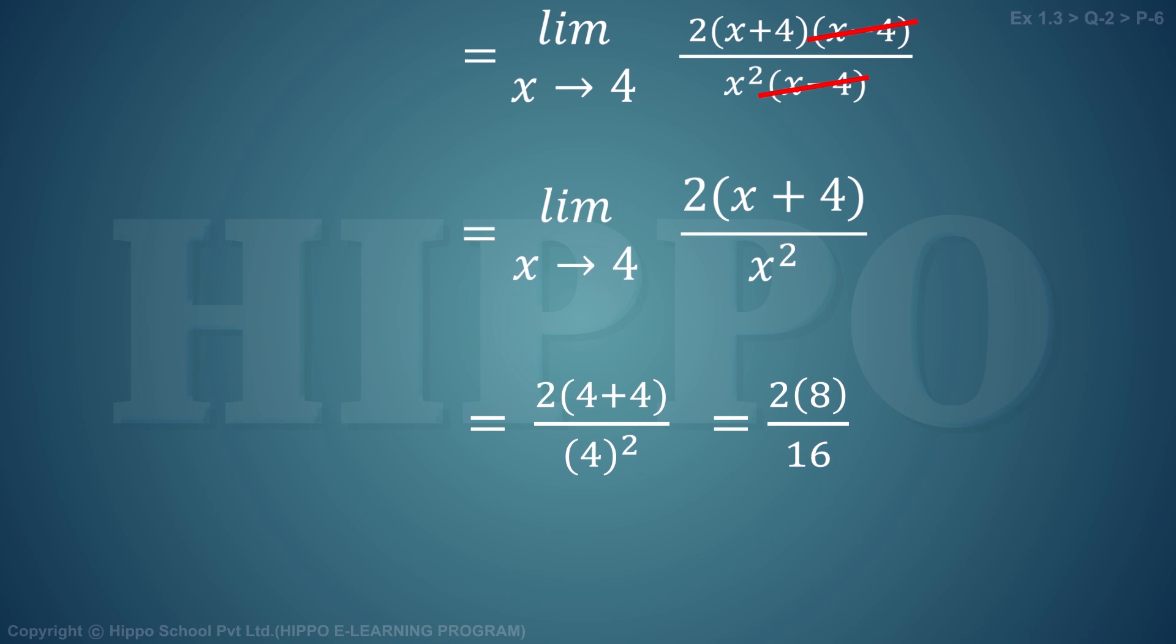So 2 times 8 equals 16 divided by 16, which equals 1. This is our answer.